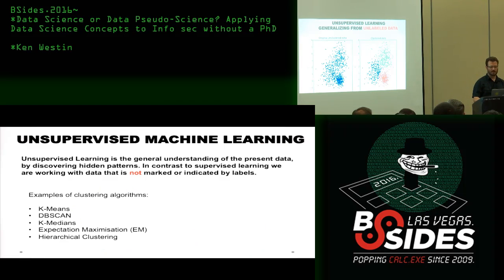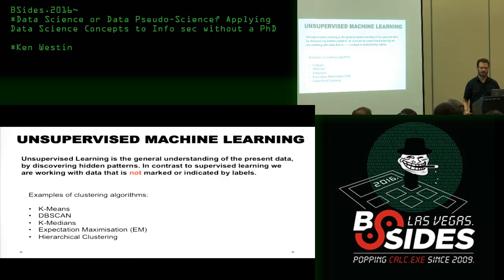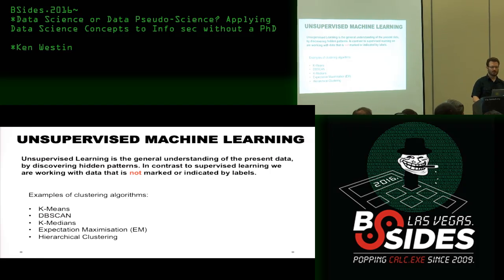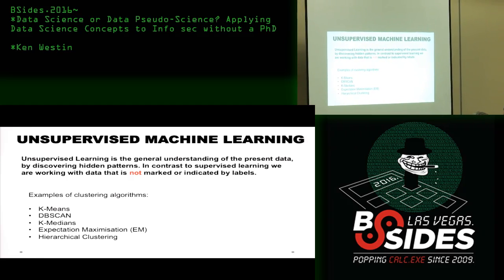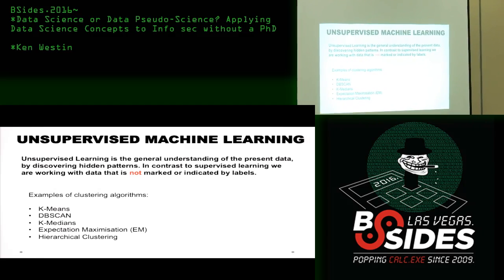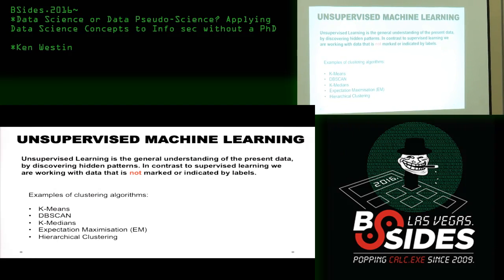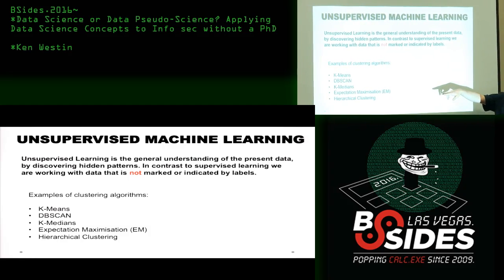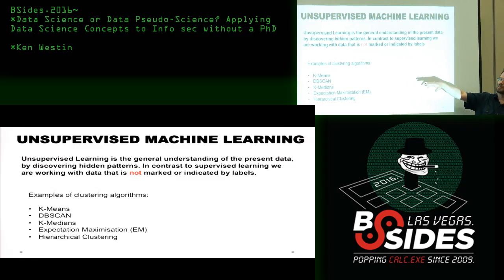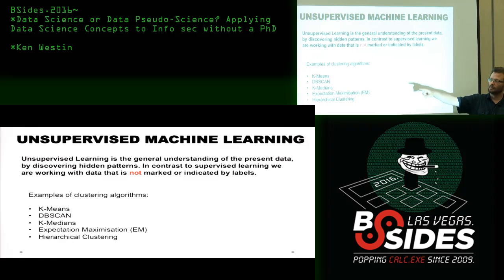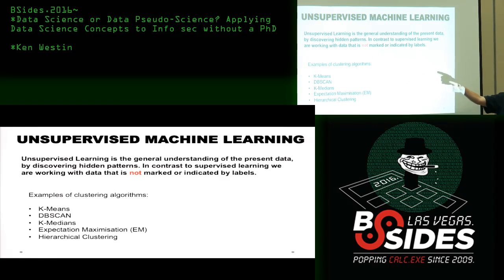Unsupervised machine learning is the general understanding of present data by discovering hidden patterns. In contrast to supervised learning, we are working with data that is not marked or indicated by labels. Here are some algorithms you're going to hear about — the most popular one is k-means, and that's what most folks use to actually identify those clusters.